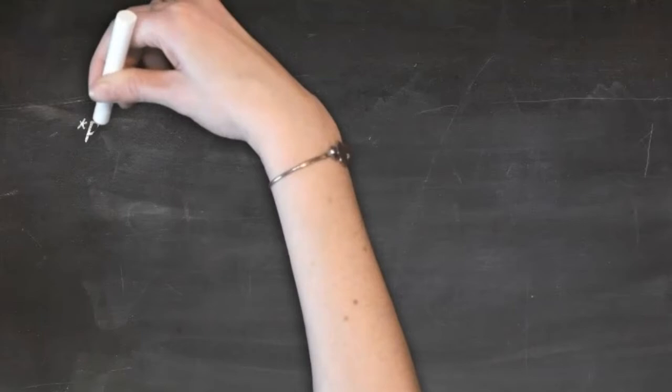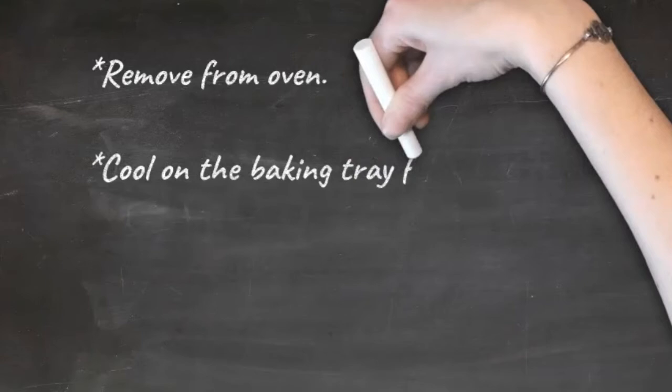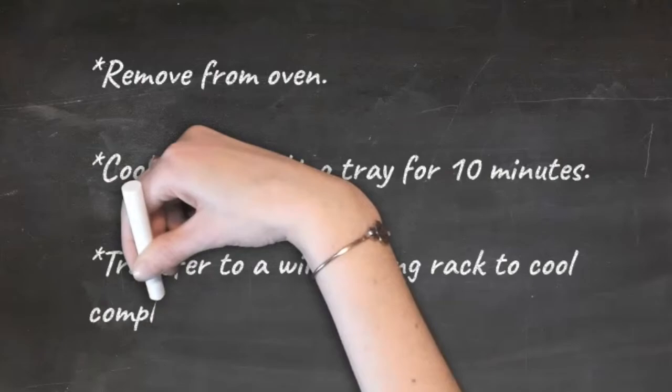All in all, it should make about 12 pasties. Place the pasties on the parchment lined baking tray and bake for 15 to 20 minutes or until the dough is cooked through and the pasties are golden brown. Remove from the oven and cool it on a baking tray for 10 minutes or a wire baking rack.